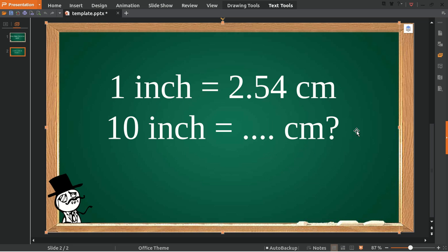To answer the question, first thing we need to do is put 10 on the left and on the right of the equal sign. So 10 multiplied with 1 inch equals - don't forget to put 10 on the right.